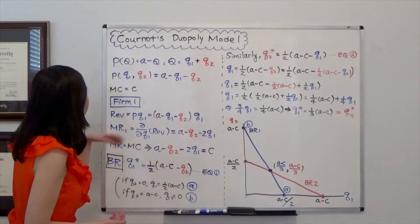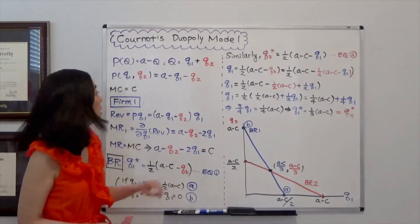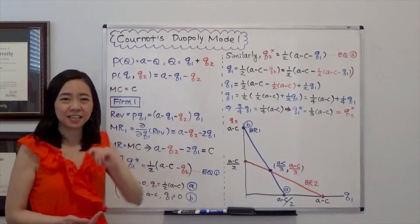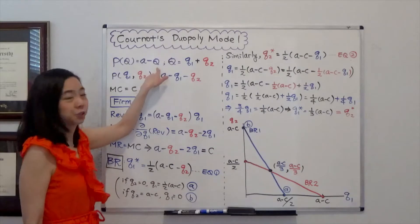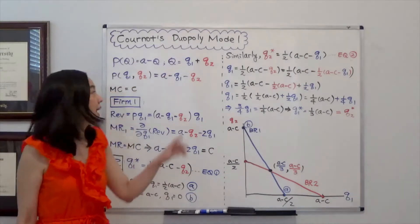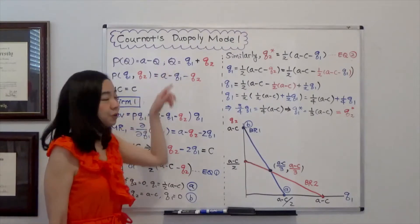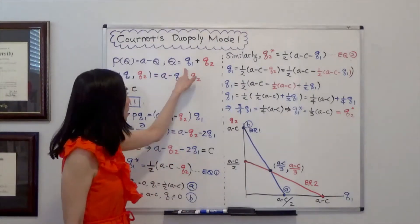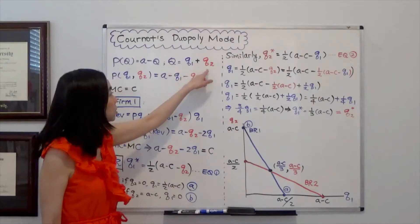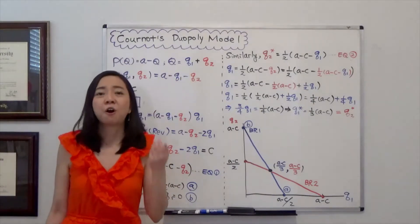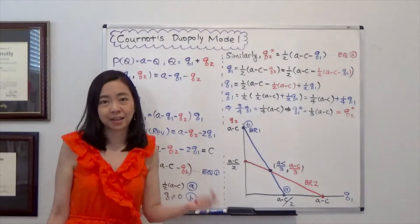So we have the inverse demand function where P(Q) is equal to A minus Q. A is a number and Q is the market quantity. And this capital Q is also equal to Q1 plus Q2 where Q1 and Q2 are the quantity of firm 1 and firm 2 respectively.